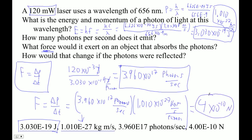Somewhat amazingly, all of this comes out to exactly 4×10⁻¹⁰ — that's a mystery why it's such a clean number. If you've watched this far, then you're good.